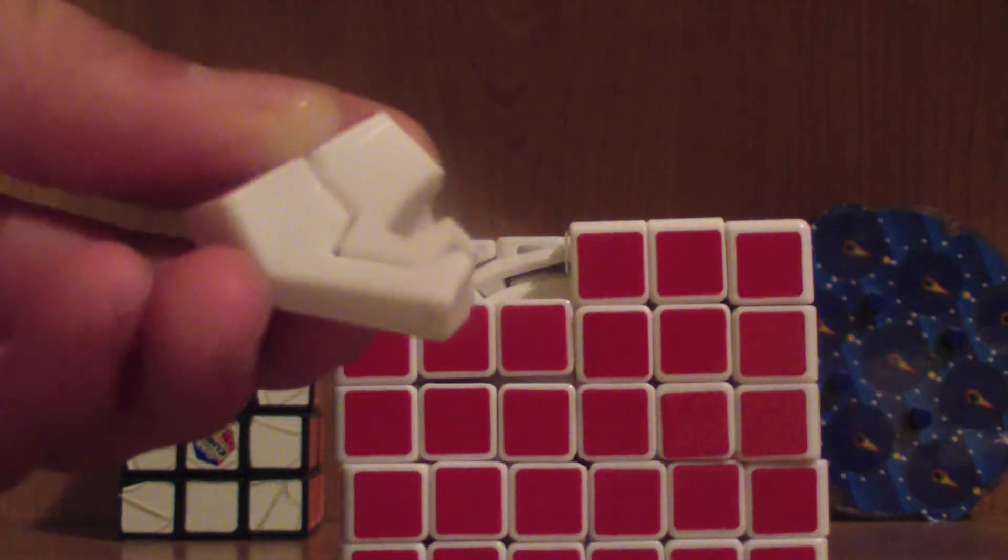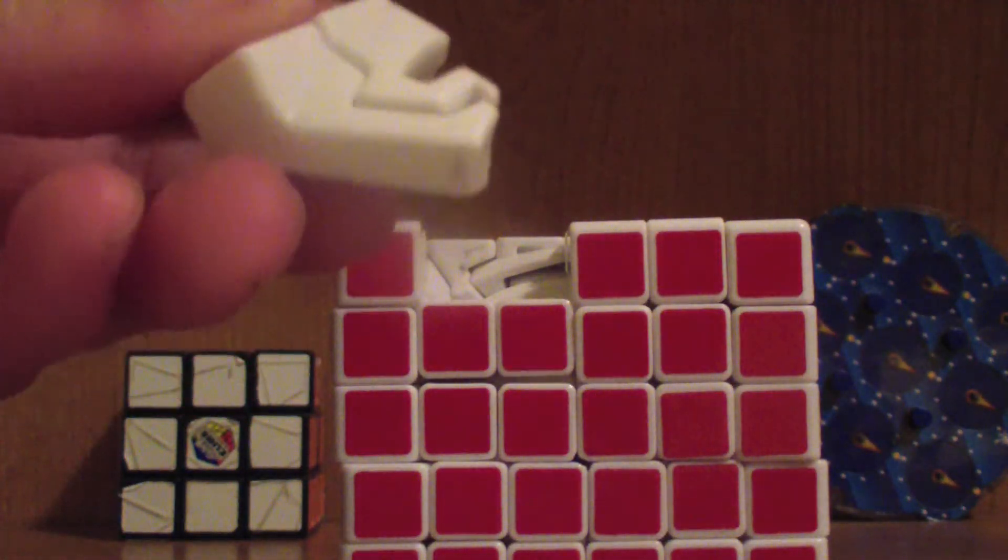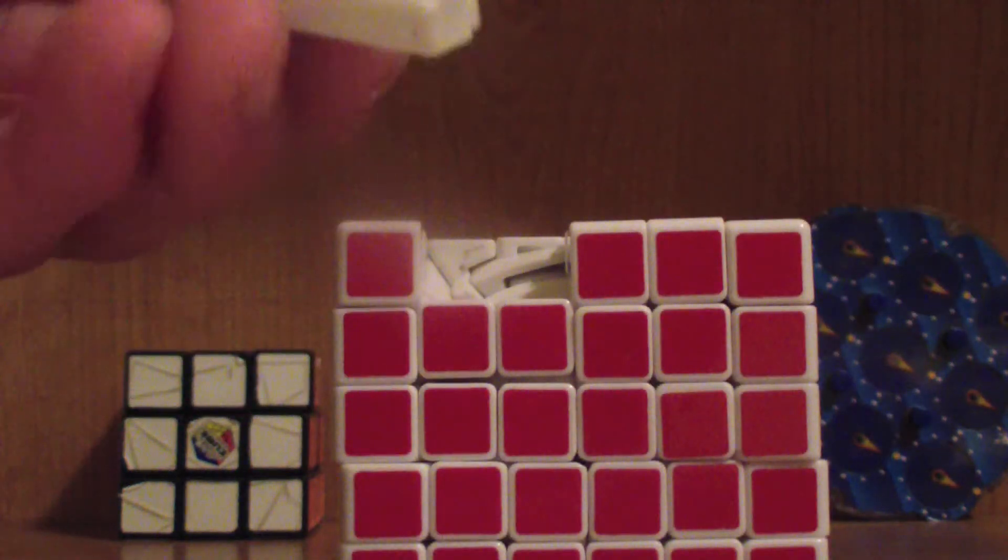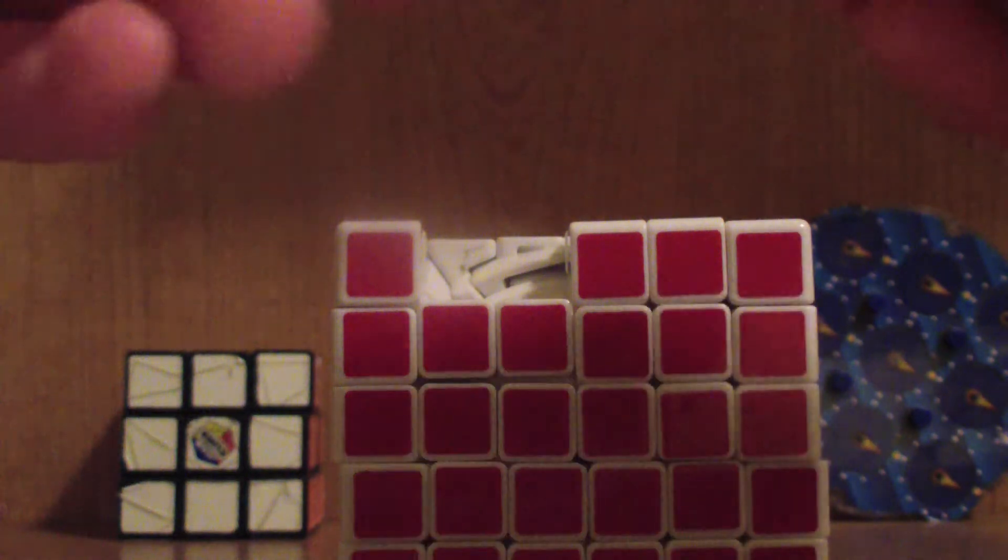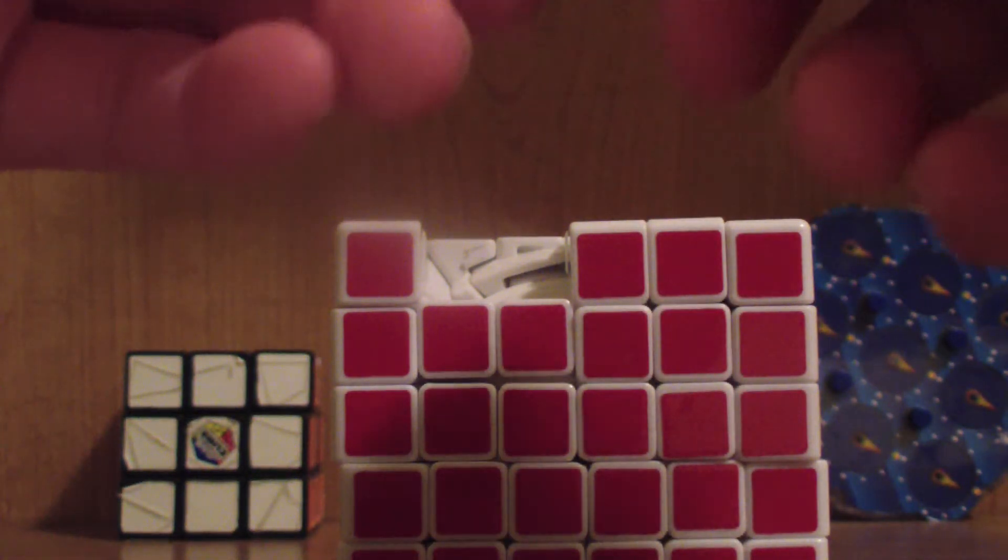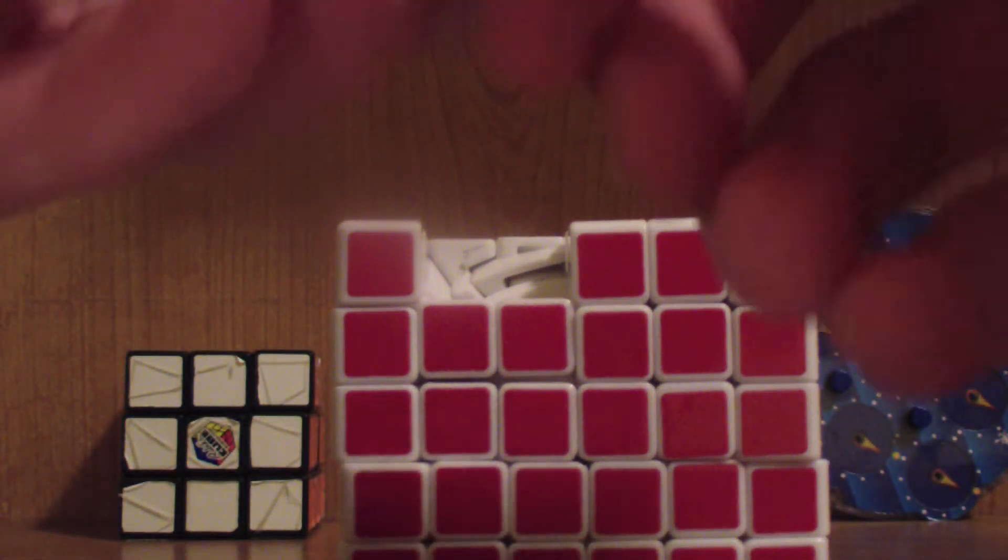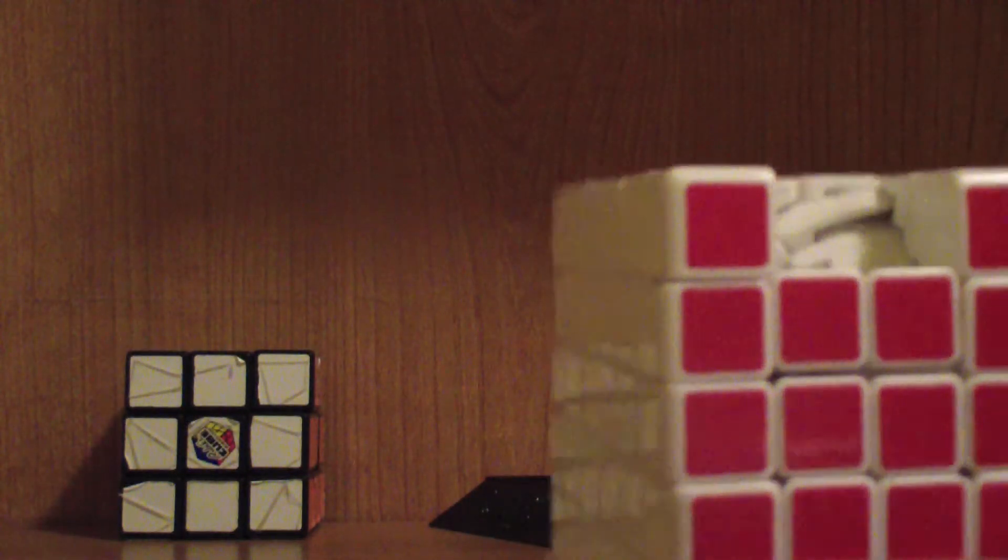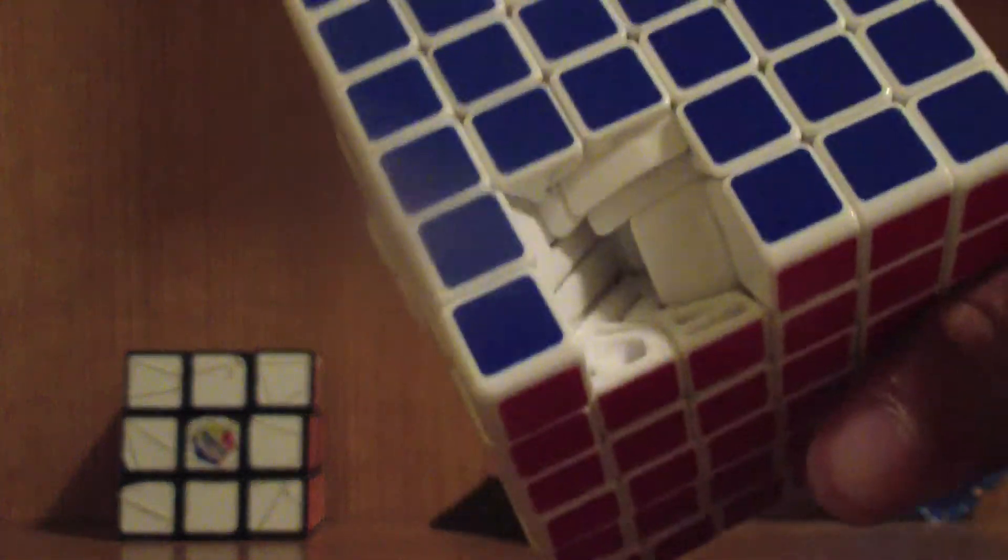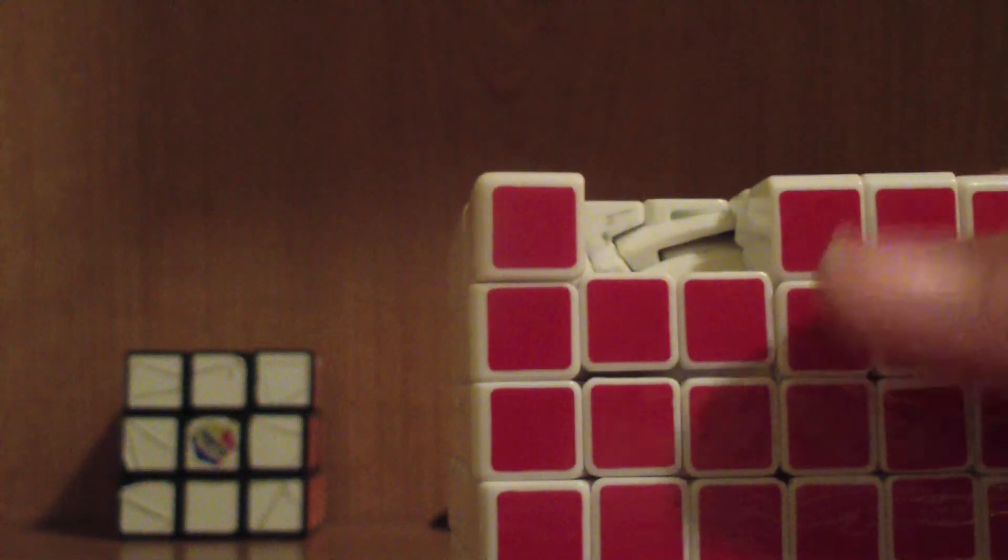A really quick look at the mechanism. The edge pieces lock in pretty well like this. So that's pretty convenient. These two pieces lock in like that. So they lock in pretty well too. So I believe there's an anti-popping mechanism to reduce popping of course. And it's pretty good. I've never had a pop with this cube ever.